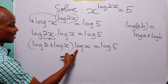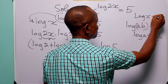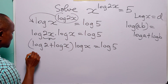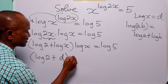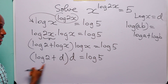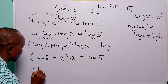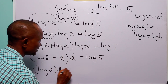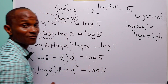We have log x here and log x here. So let log x be equal to d. With this substitution, this equation now becomes log 2 plus d, multiplied by d, is equal to log 5. Now let us open this bracket: we have log 2 times d, and d times d which is d squared, and this is equal to log 5.